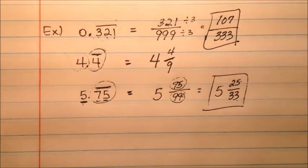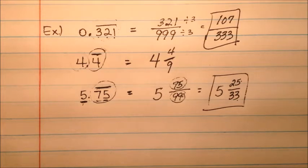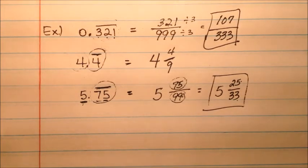So remember, whenever you're using repeating decimals, your denominator is just going to be a 9 or several 9s, depending on how many digits you have that are repeating.